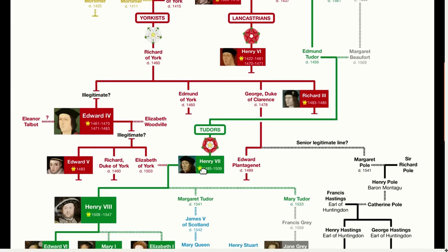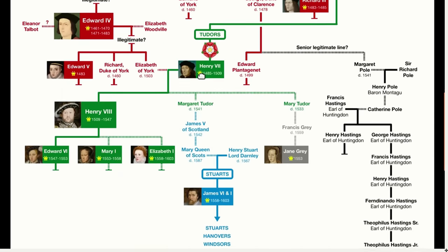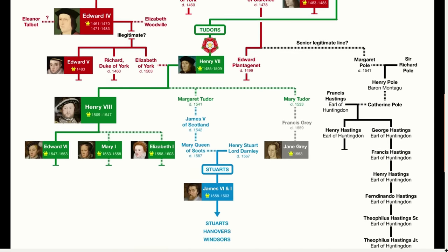This marriage was seen as the end of the Wars of the Roses — a unification of the Yorkist side with the Lancastrian side. This was symbolized by the Tudor rose, which combined the white rose with the red rose. From this point we get the rest of the Tudor monarchs before the throne then passes to the Stuarts.